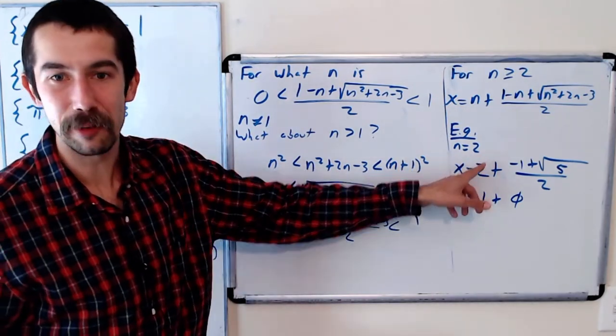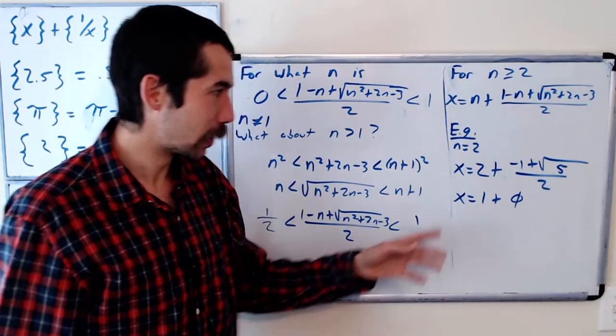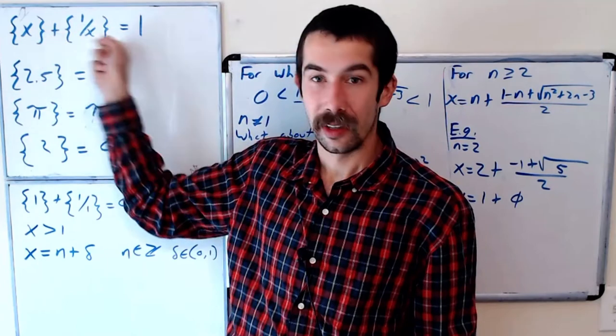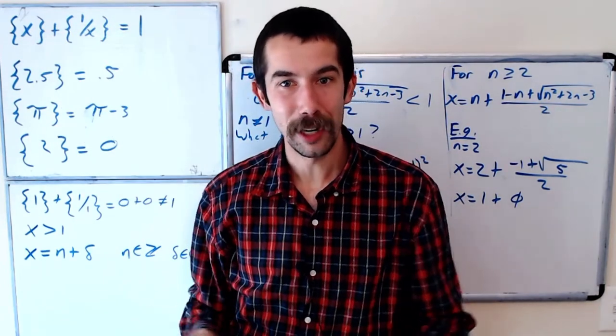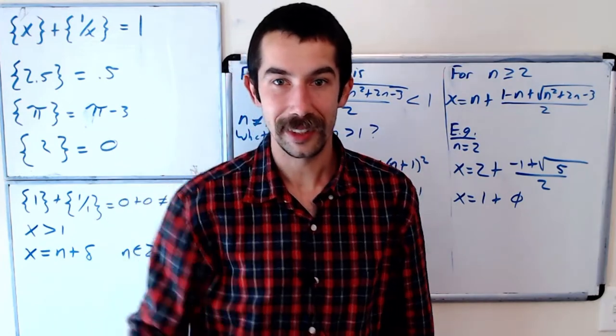Okay and yeah so for any value of n greater than or equal to 2. So n equals 3, n equals 4, n equals 5 and so forth. You'll get a different number that satisfies this equation. Let me know what you think. I thought this problem was pretty neat so that's why I shared it. All right see you later.